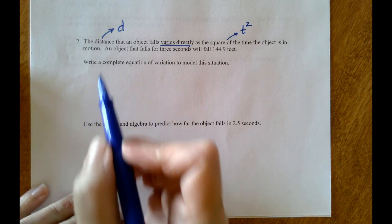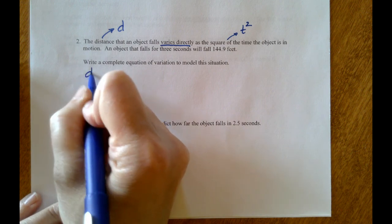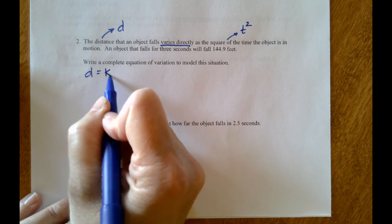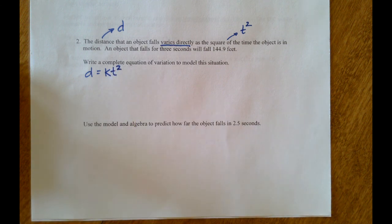First, we can go in the order of the English statement: d equals k, for direct variation, it'll be times t squared. So there's our generic model.